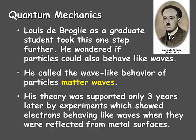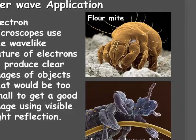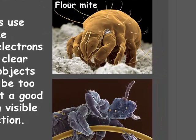Remember, electrons are tiny particles of matter, and therefore matter can behave in a wave-like fashion as well. An application of matter waves is the electron microscope. Electron microscopes use the wave-like nature of electrons to produce clear images of objects that would be too small to get a good image using visible light reflection, such as what we see here on the right. These are not computer-generated images, so to speak, although computers are used to interpret the information as electrons are bounced back to a detector.